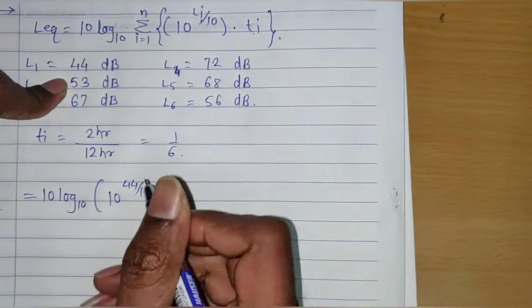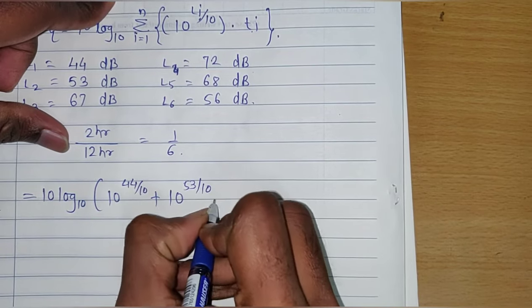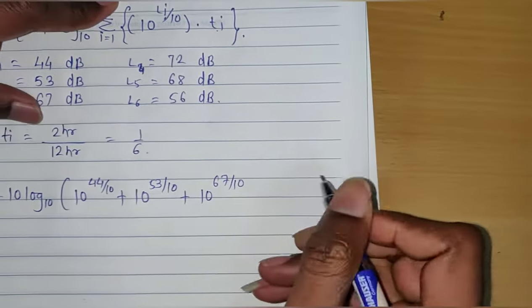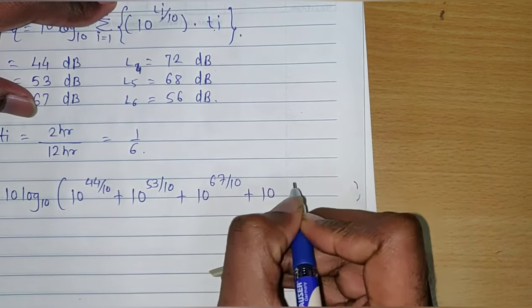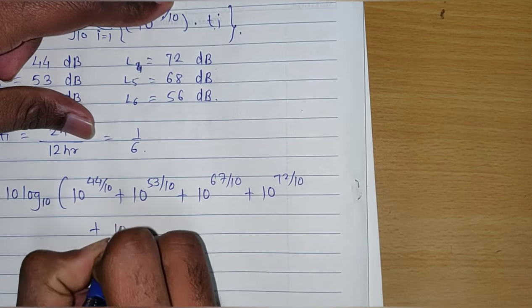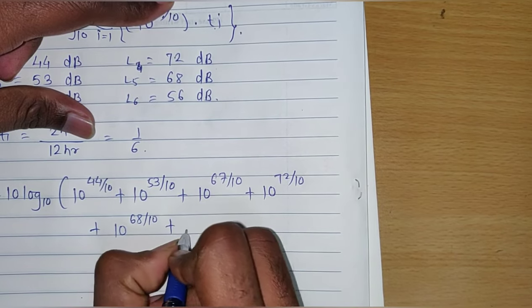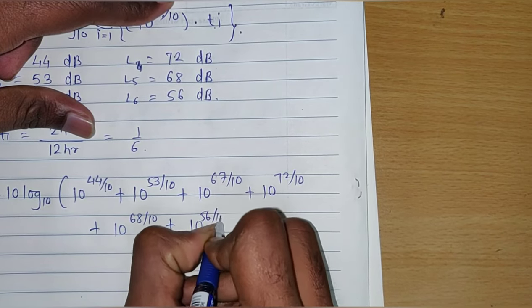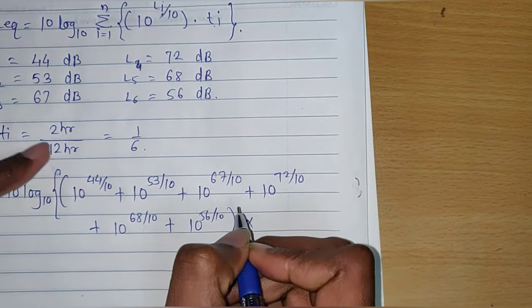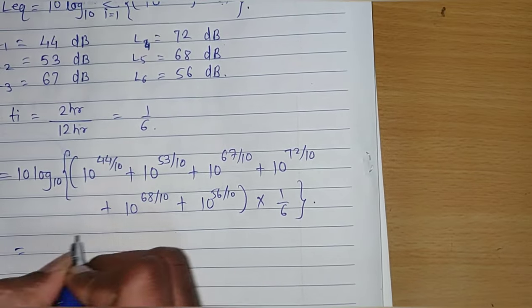plus 10 raised to the power 72 by 10 plus 10 raised to the power 68 by 10 plus 10 raised to the power 56 by 10, multiplied by t_i which is 1 by 6. After solving this you will get the value of equivalent noise level as